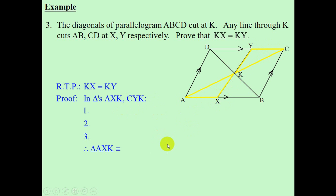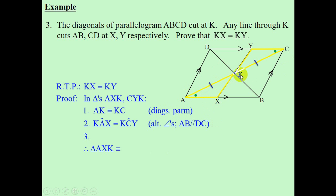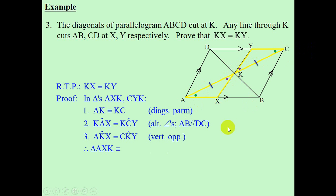We're looking for three features that will give us a case for congruency. Number one: AK is equal to KC, and the reason is the diagonals of a parallelogram bisect each other — they cut each other in half. Do we have any angles that are equal? Angle KAX and angle YCK are equal — the reason is alternate angles. Last, we have vertically opposite angles: angle AKX is equal to angle YKC. Do we have a case? Most definitely. The case we are using here is side, angle, angle. We have proved that the two triangles are congruent.